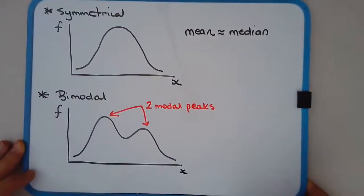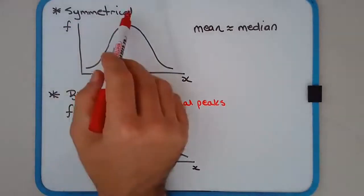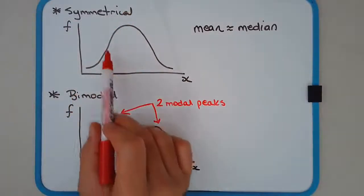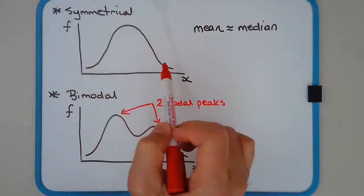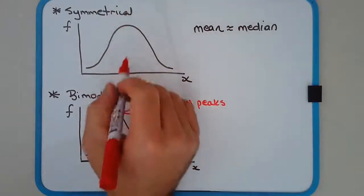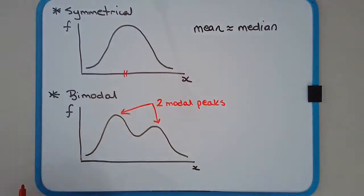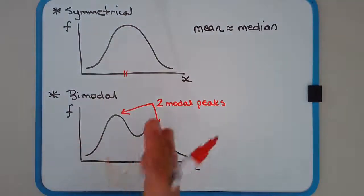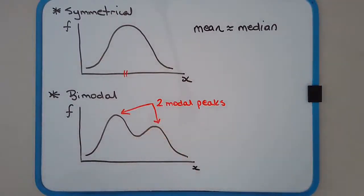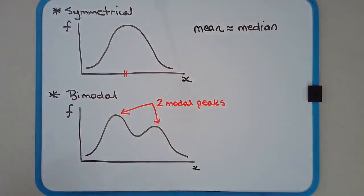Moving along to a well-behaved type of distribution called a symmetrical distribution, and it's exactly that because the distribution is symmetrical. The mean and the median tend to be roughly sort of in line with each other, so toward the middle. So these are the quite well-behaved distributions. The bell curve would be an example of a symmetrical distribution.